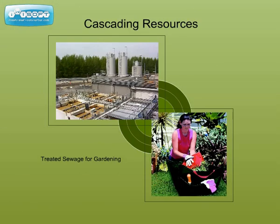One strategy is that of cascading resources. Here, resources are made to perform more than one activity before their disposal into the environment. The easiest example is the use of treated sewage in gardening.